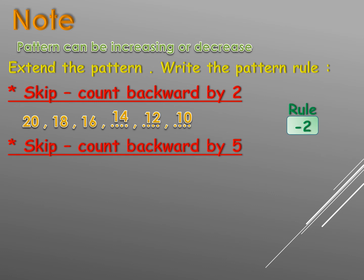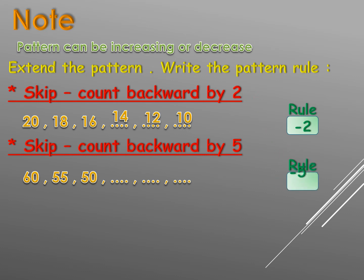Skip counting backward by five: sixty, fifty-five, fifty. Are the numbers decreasing or increasing? Decreasing — that means minus. Our rule is minus five. Sixty, fifty-five, fifty, minus five equals forty-five, forty-five minus five equals forty, forty minus five equals thirty-five.